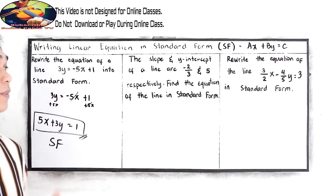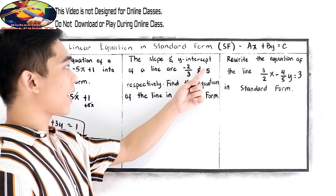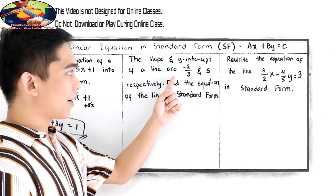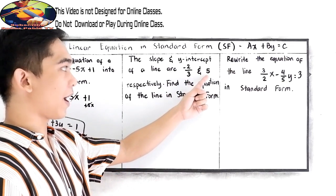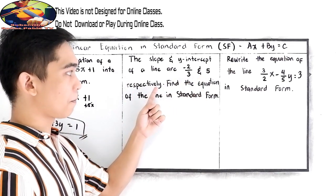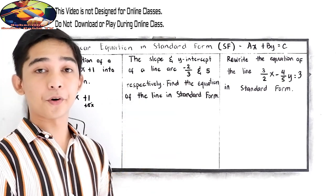Let's proceed to number 2. The slope and y-intercept of a line are -2/3 and 5, respectively. Find the equation of the line in standard form.